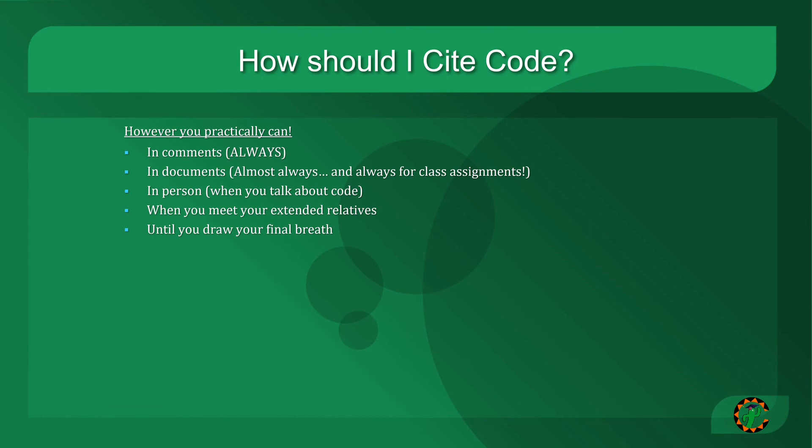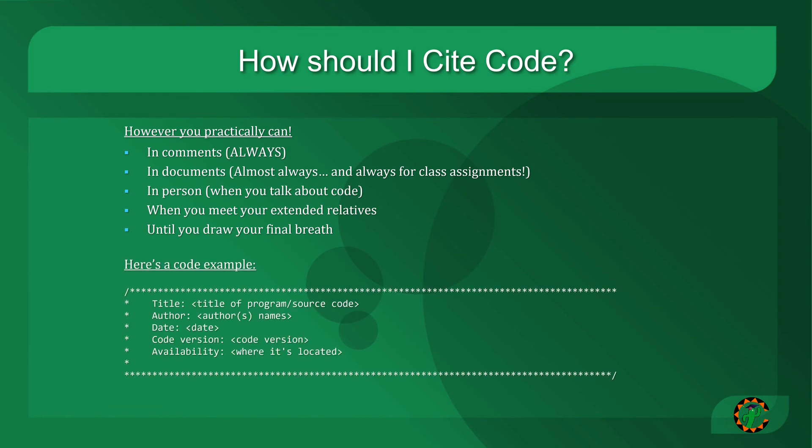If you're looking for an example of how you might cite something in code, we usually do so using some block of comments. The typical practice is to use the title of the program or the source code section, whoever the author is, the date that you got it, the version of the code, and where someone else can find it. At an absolute minimum, if it's available on the web, you need to have a URL so that at least that way, the citation can be expanded later. There's much more information at the link I'm showing here that's in the lecture slides about citing code, but you can also find sources all over the internet.